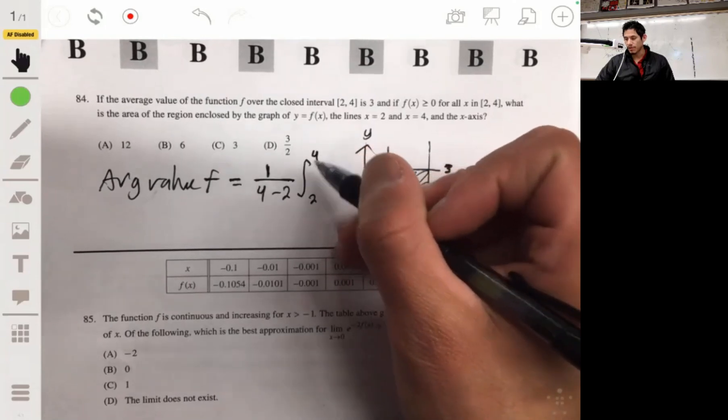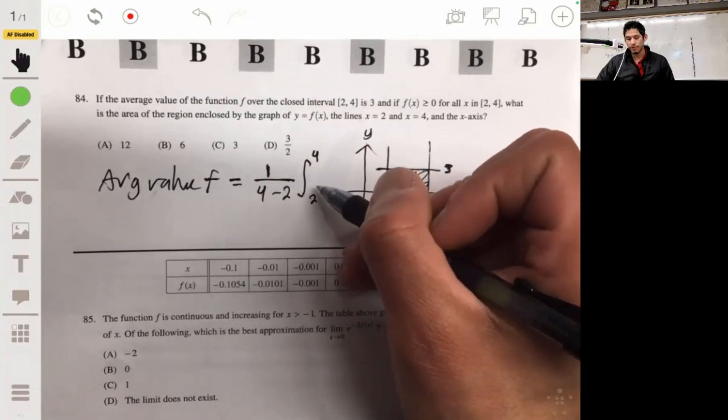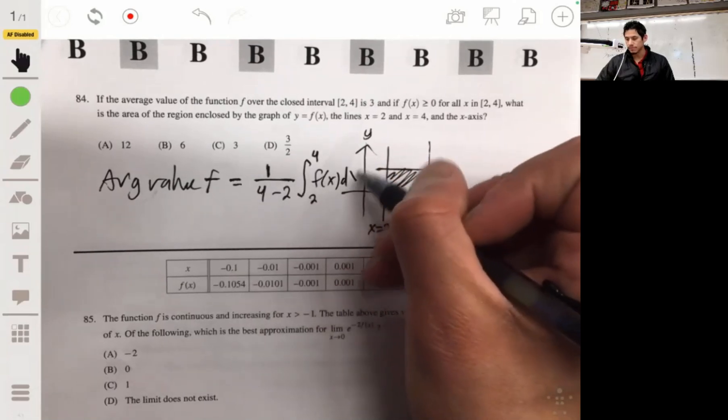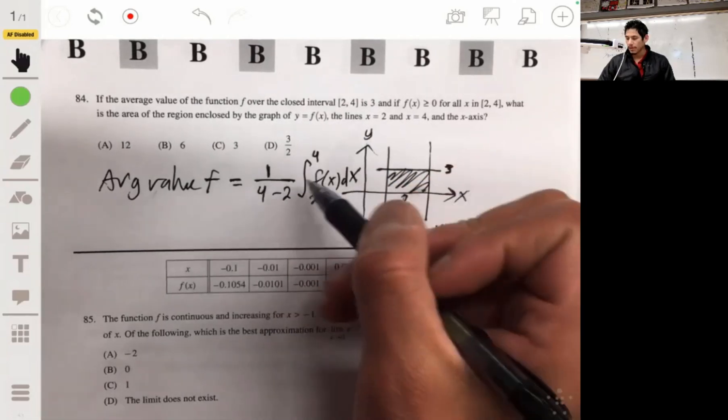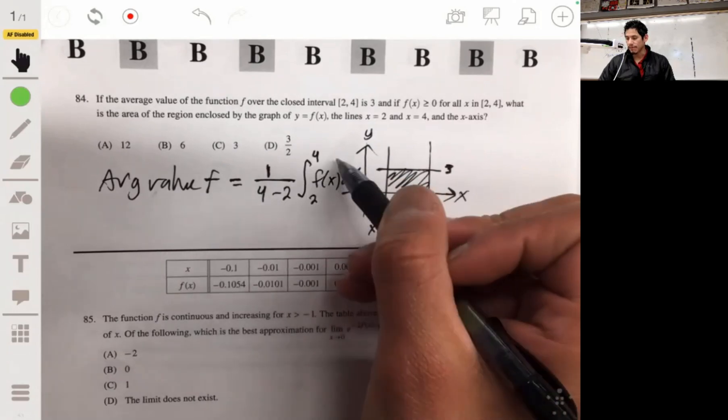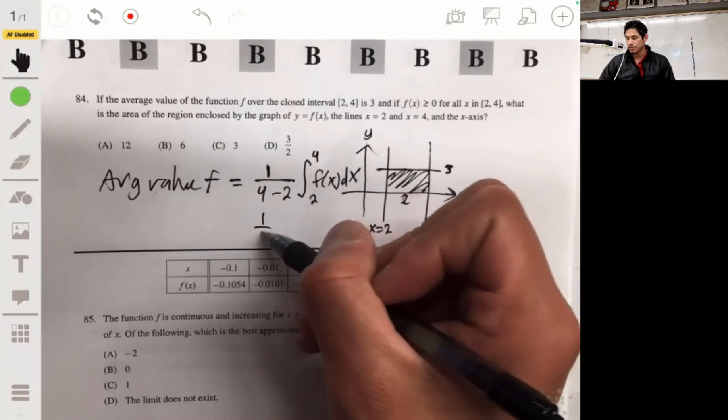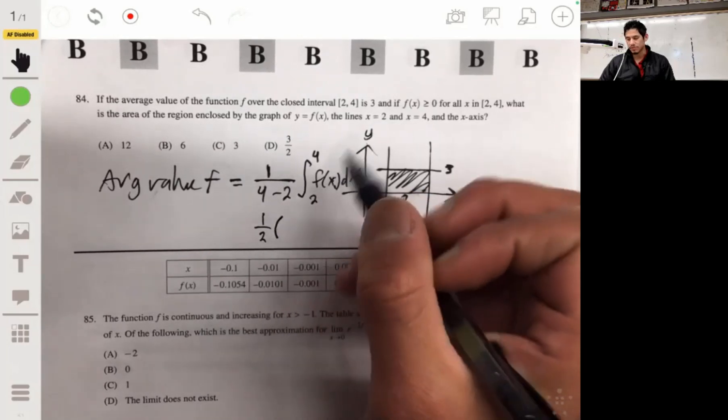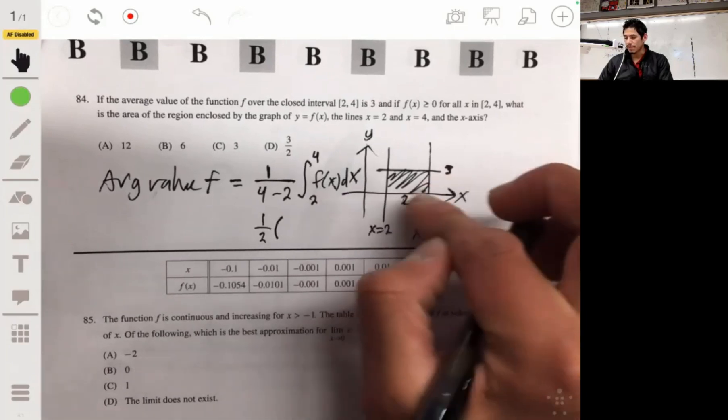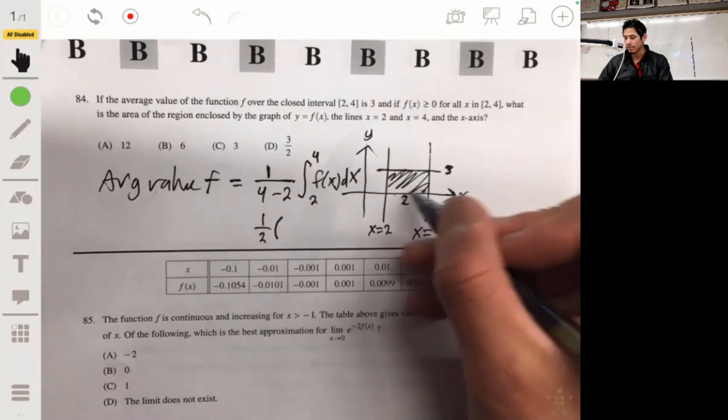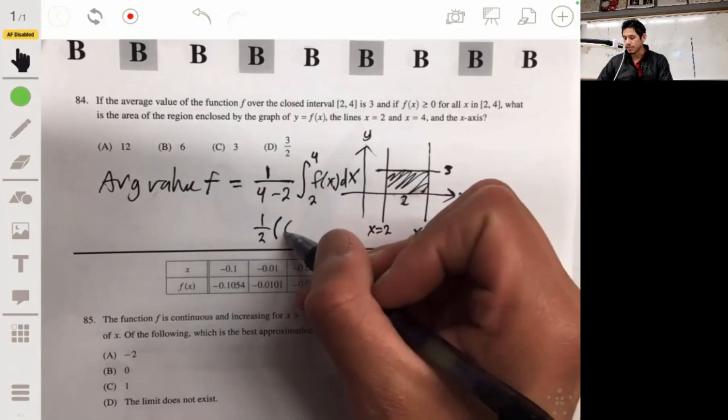So even though we're going to take this integral from 2 to 4 of f(x) dx, the average value, this part becomes just 3. So it's really just one half, I'm sorry, this part becomes 2 times 3, becomes this rectangle. 2 times 3 is 6.